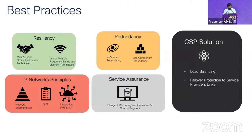For redundancy, inter-satellite links can take sub-optimal paths rather than just the shortest path. Satellites that are over the ocean side and not processing much traffic can be used to route load. Satellites also carry redundant on-board components for failover. Enterprise site-to-site connectivity can apply standard IP network principles — QoS, access lists, IPv6 — all integrable into satellite links.